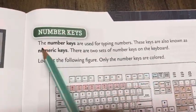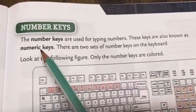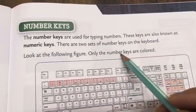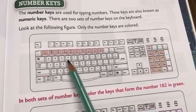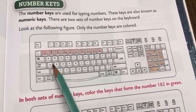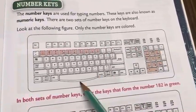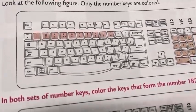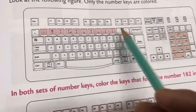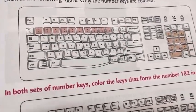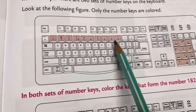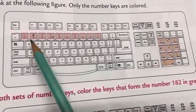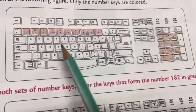Number keys: the number keys are used for typing numbers. These keys are also known as numeric keys. There are two sets of number keys on the keyboard. In this figure, only the number keys are colored. We use the number key whenever we want to type a number on a computer. One set is present at the top of the keyboard, and the other is on the right side. The number keys are colored in pink.